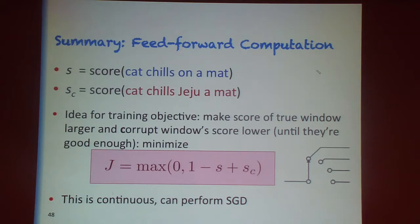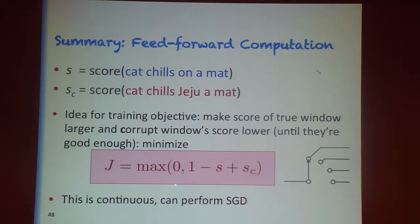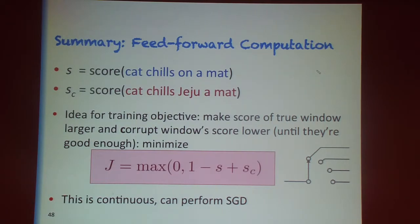The training objective is that we want the score of true windows to be significantly larger than the score of bad windows. This is a large margin training objective — we want a significantly better score for the good one, otherwise we incur a loss. Having this max in the objective means it's not differentiable, but it is a continuous function that we can run SGD over.